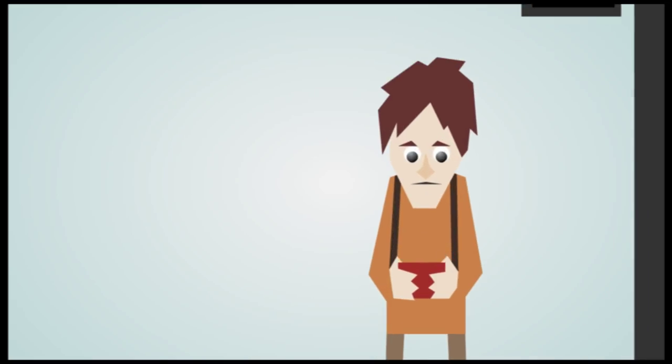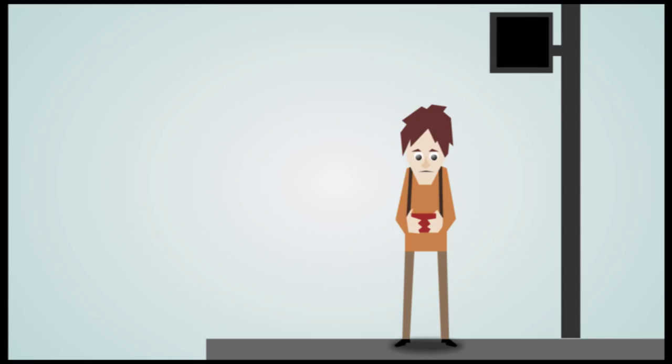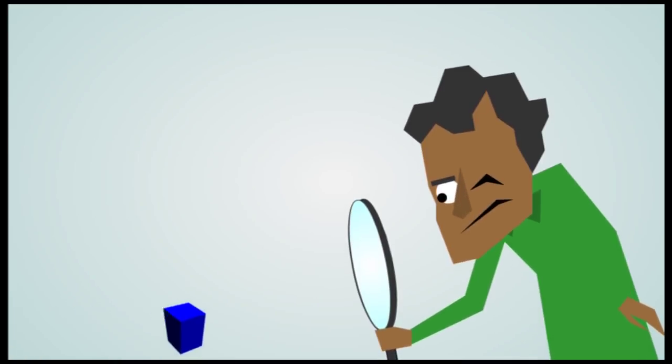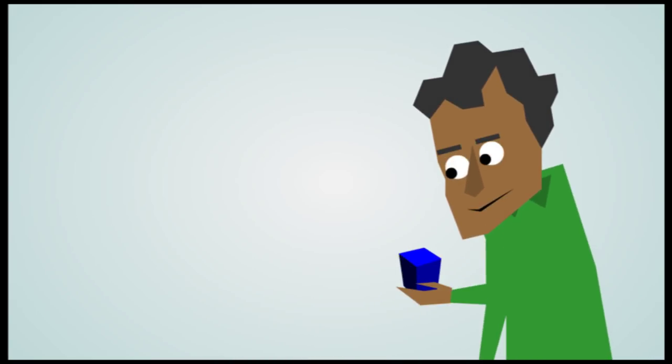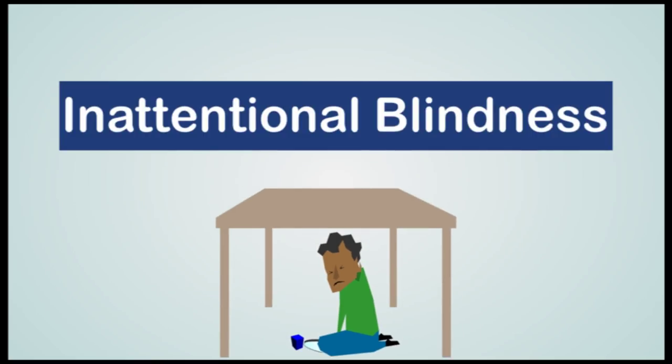In life, being focused helps us ignore distractions, but this focus can cause us to overlook unexpected opportunities. Similarly, when we focus our attention on finding a particular object, we often fail to notice other unexpected objects, a phenomenon referred to as inattentional blindness.